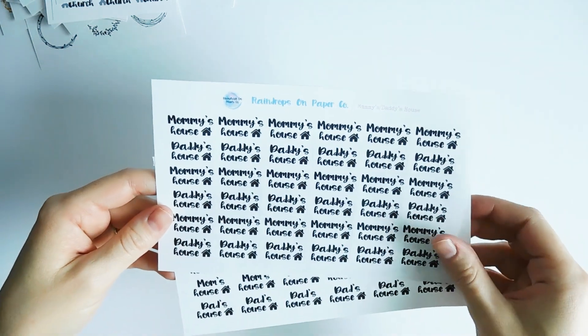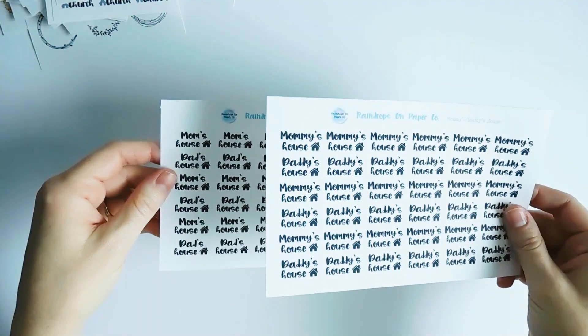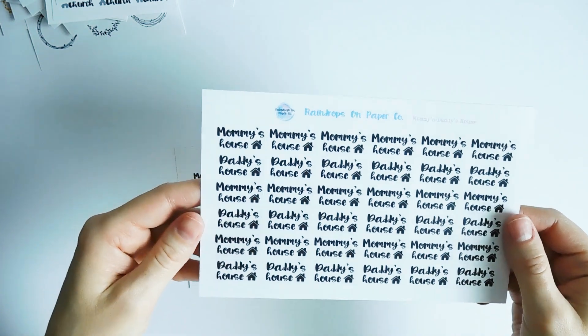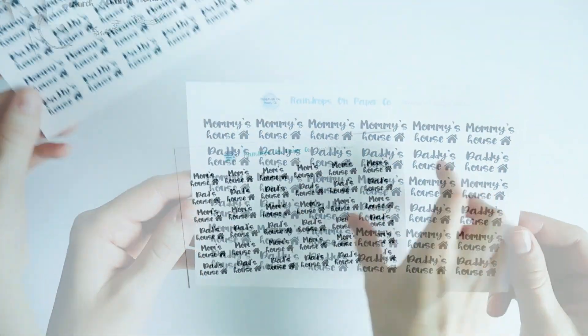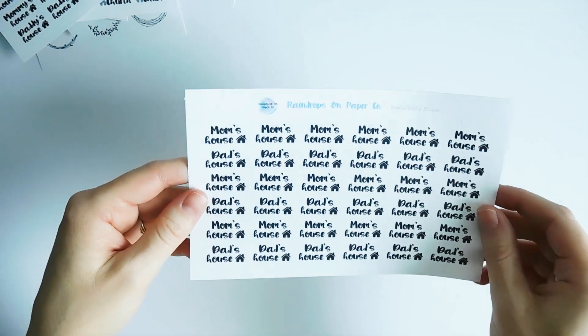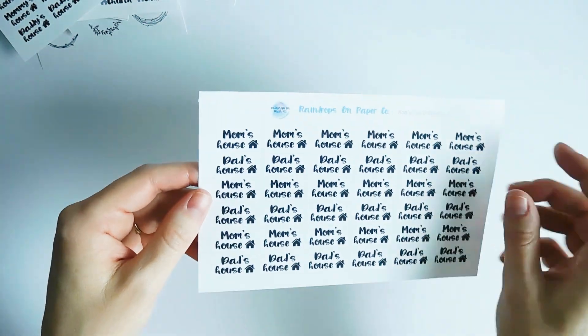And then as far as co-parenting goes, I've got two sheets here. These were a request. I've got one that says mommy's house and daddy's house. You've got alternating stickers. And then this one's for maybe the kids who don't use mommy and daddy. And it's the same thing, just says mom's house, dad's house.